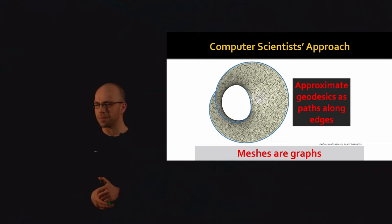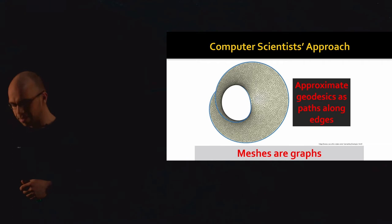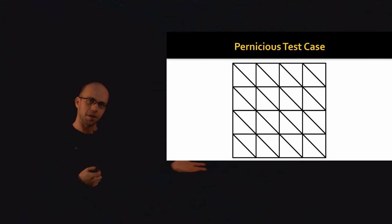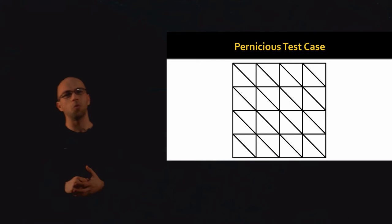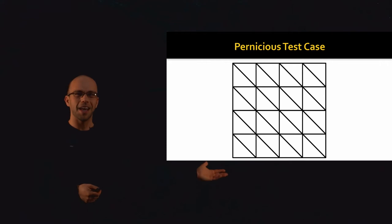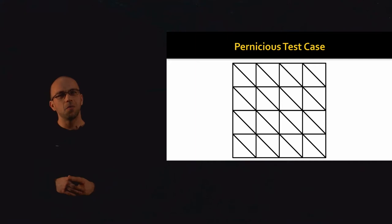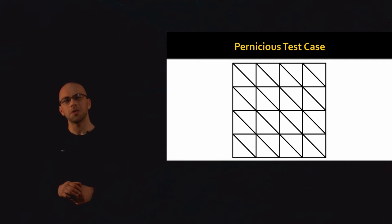If we could use geodesic paths along mesh edges as a proxy for actual geodesic distances, that would be great — we have many algorithms for shortest paths on graphs. Let's consider a particular test case: a mesh of the unit square. Divide it into an n-by-n grid and split every square using a diagonal line. We can use this triangle mesh to see how well the approximation works. The question is: do shortest paths on graphs act as good proxies for shortest paths between points on a manifold?